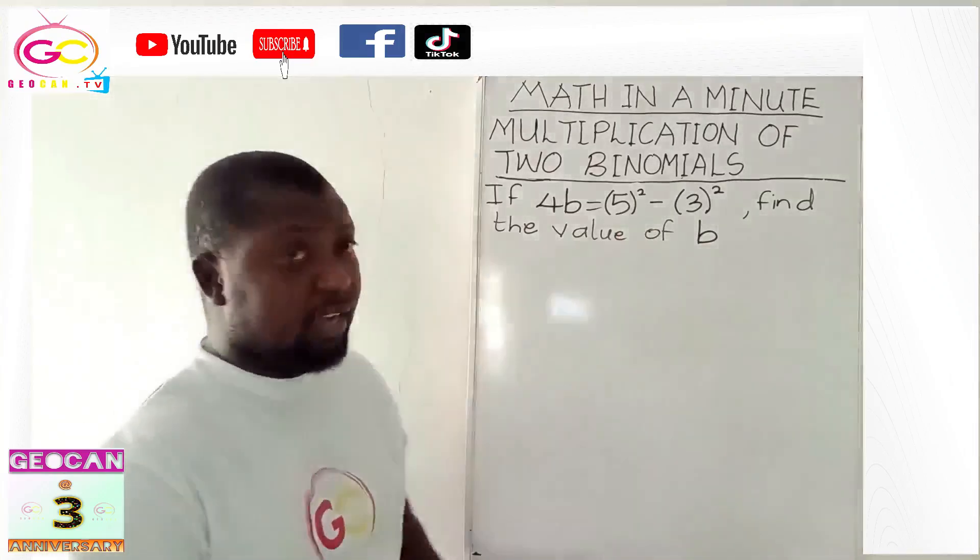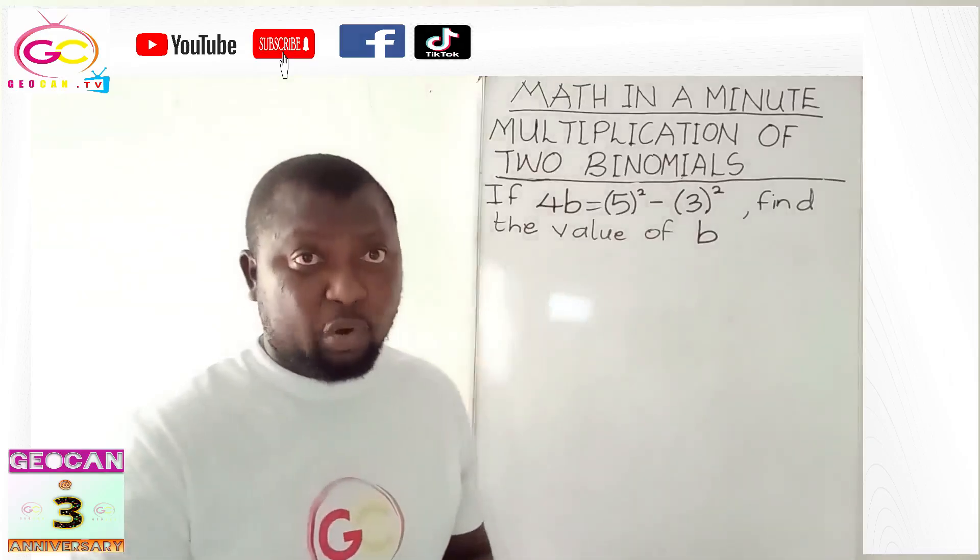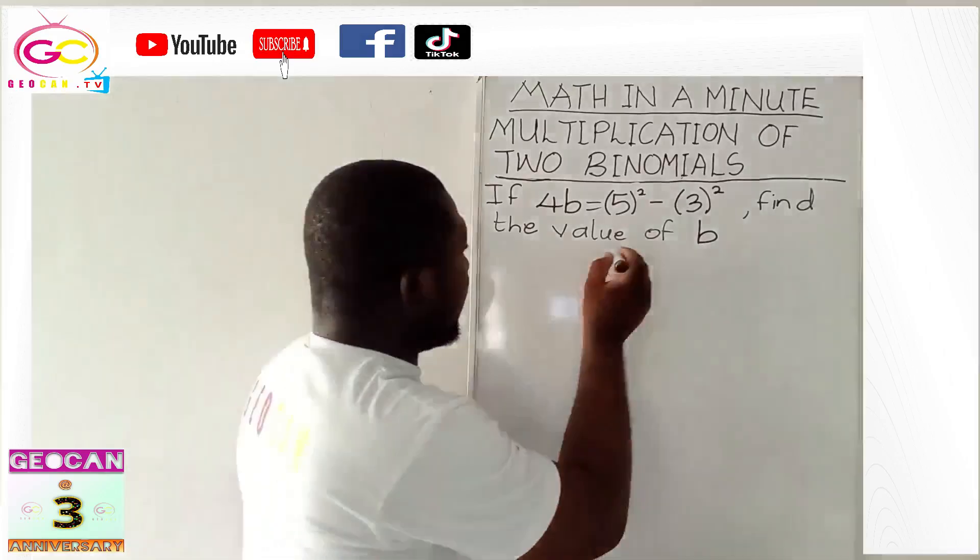We are going to use two methods in solving this. First of all, we are going to use the difference of two squares. And the second method will be the normal indices method. So, let's have our solution here.